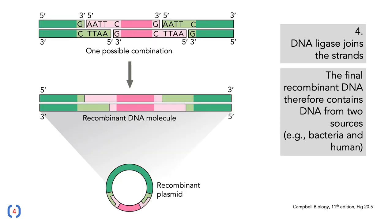At this point, although the gene is stuck in the right place, it's not physically joined together — there's no covalent bond on the DNA backbone. This is where DNA ligase comes in. DNA ligase joins the strands together, creating the final recombinant DNA that contains DNA from two sources: in this case the bacterium, shown in green, and say a human or some other organism, shown in pink.